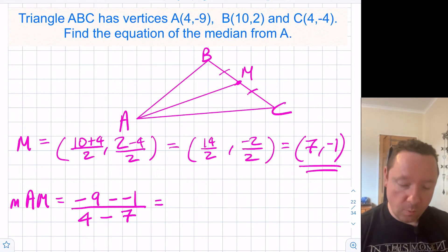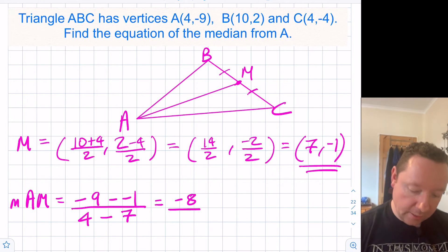Minus 9 add 1 is negative 8 over negative 3, so that's just 8 thirds. We've now got our gradient.